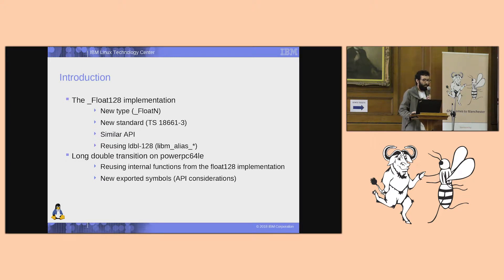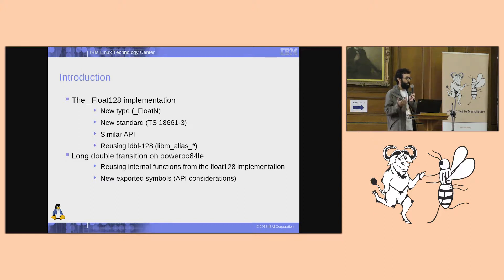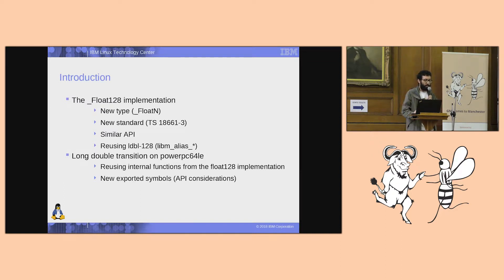For those not familiar with the way Glibc code is structured in the code repository: platforms that already have IEEE long double use code stored in the LDBL-128 directory under the sysdep directory. The Float128 implementation, even for PowerPC which does not regularly use this directory, reuses the code in that directory. So a lot of reusing has been done for this.